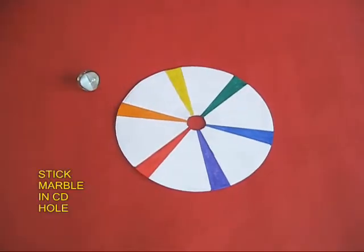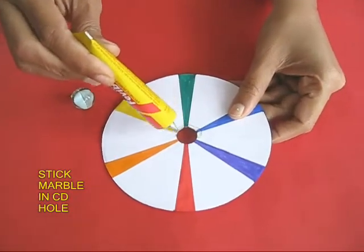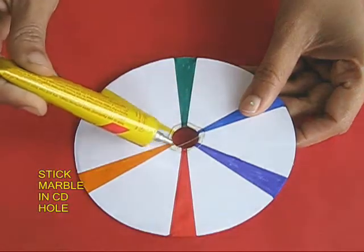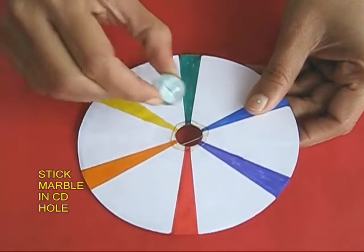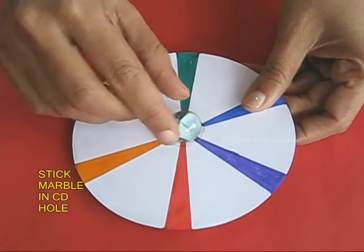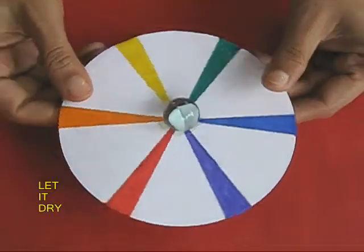Then take a marble, lift the CD, and apply a little bit of the rubber adhesive in the hole at the center. Then place the marble in the hole. Wait for a while for the marble to dry.